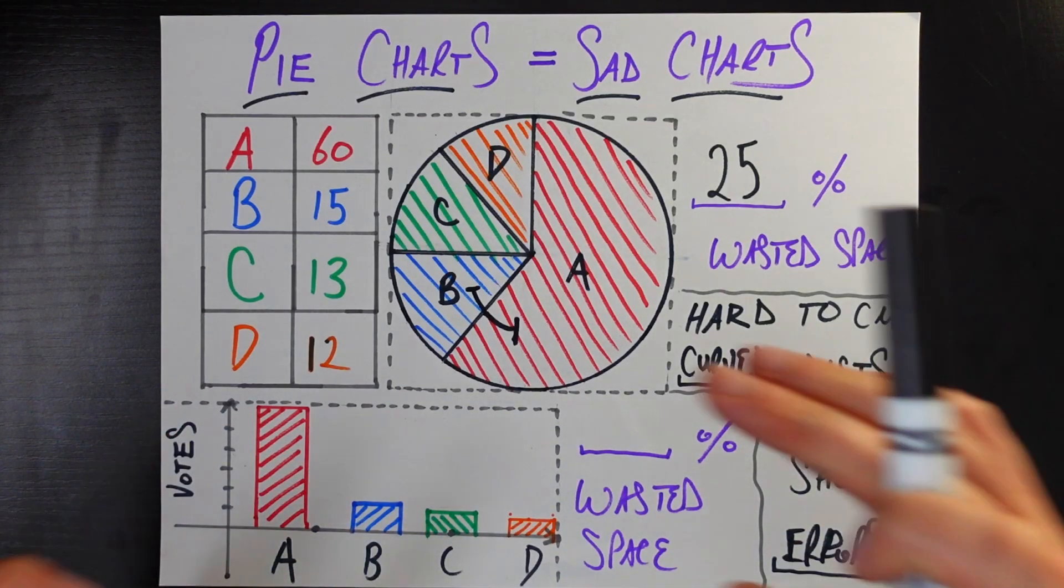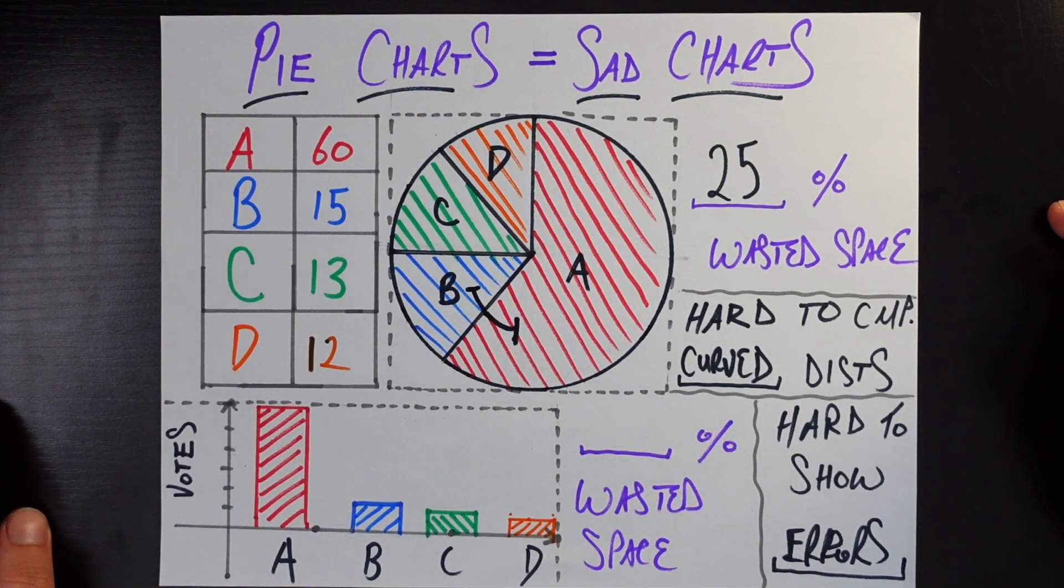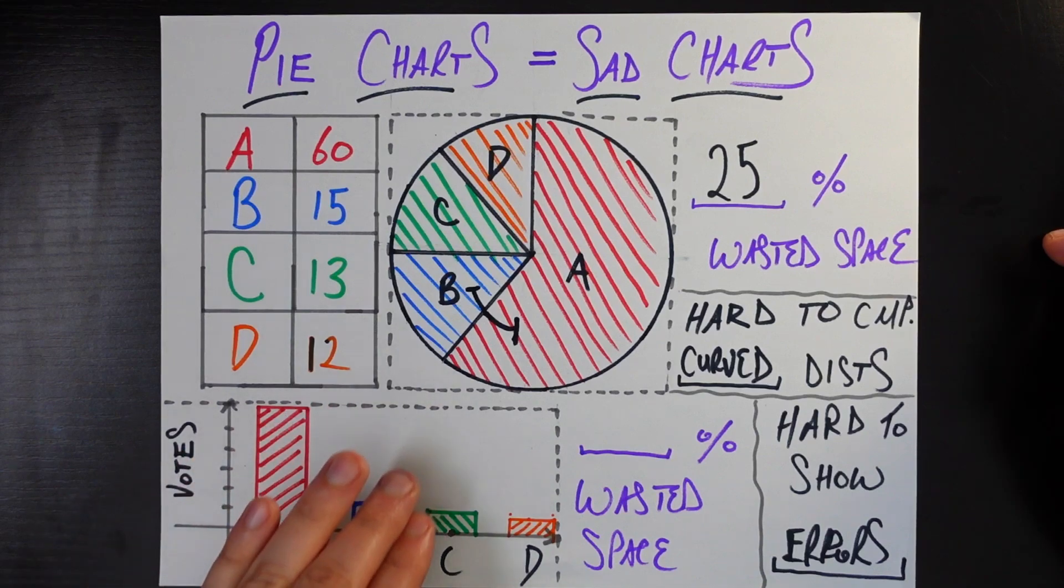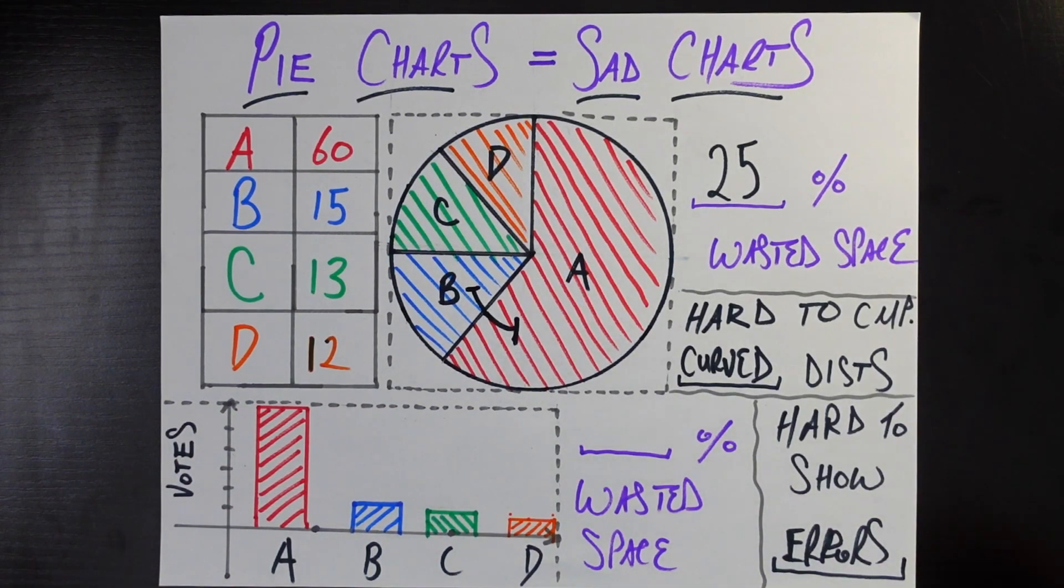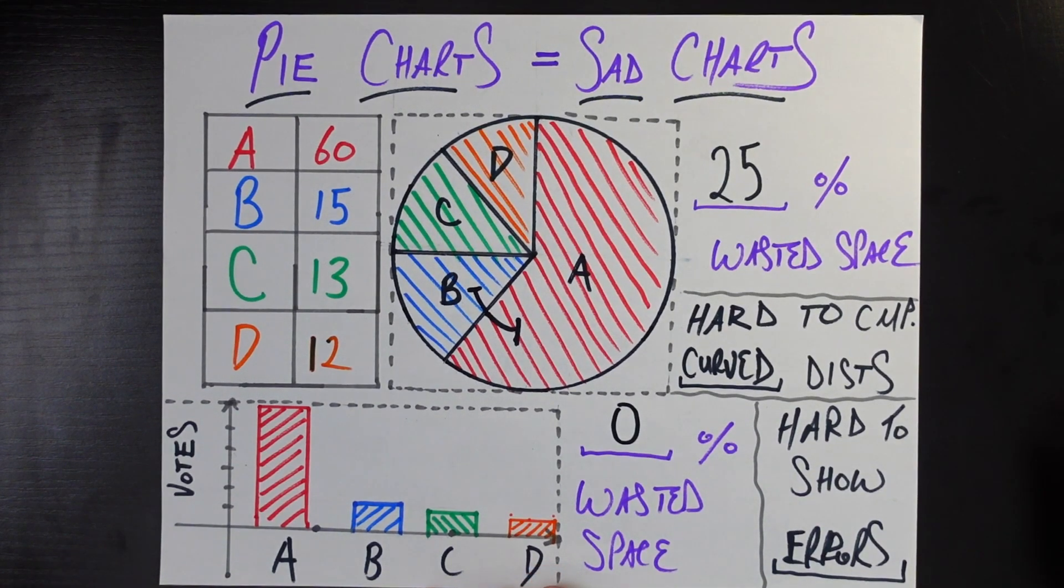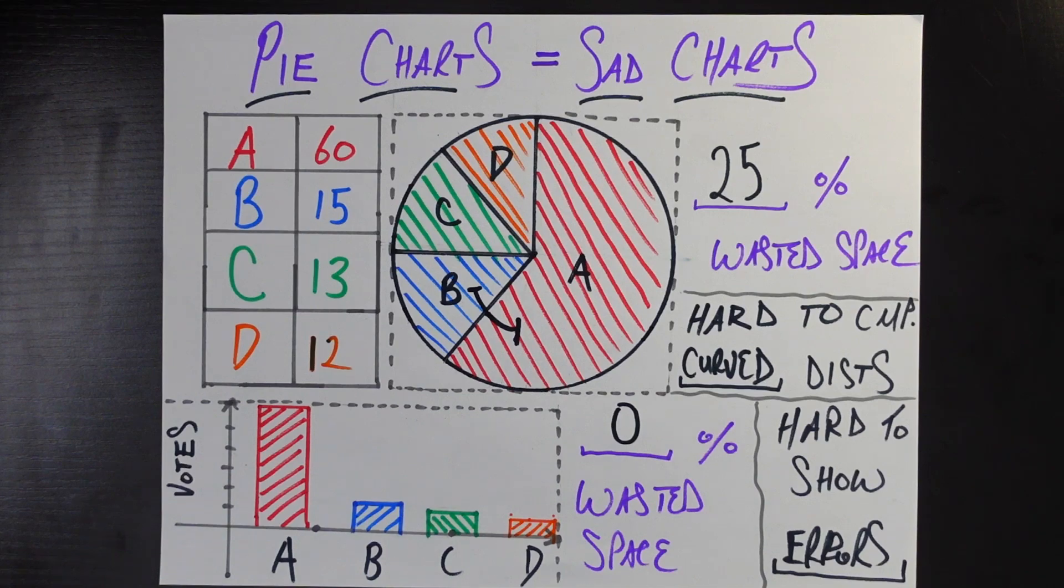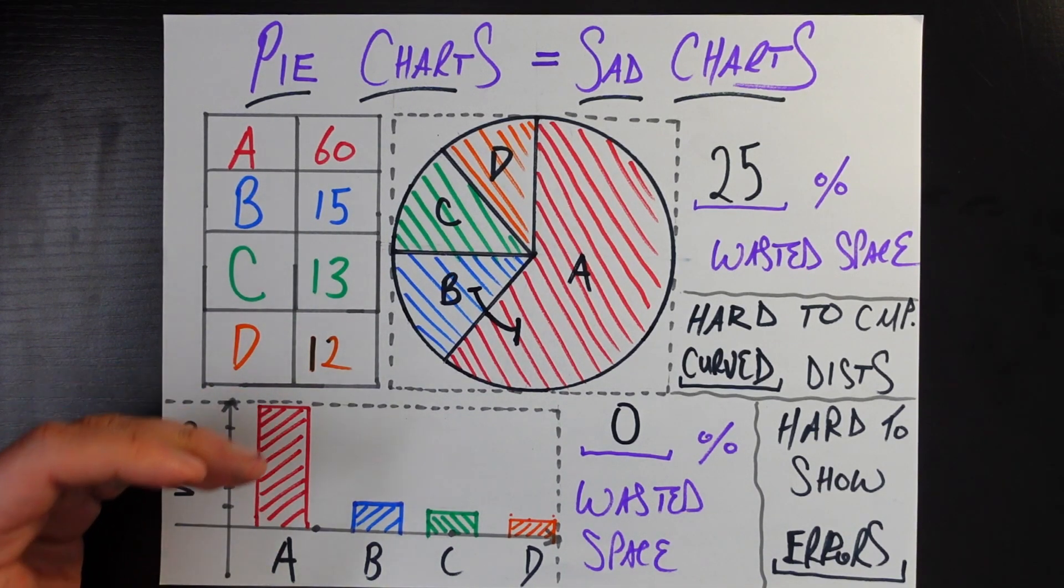So it's not space that's just completely unused from the chart. Like if I were to just eliminate that space altogether and replace it with something else that's part of my document that I'm creating, it would be fine. I need this space as part of the chart. So it's actually 0% wasted space for a bar chart versus a pie chart. They're just more space efficient.